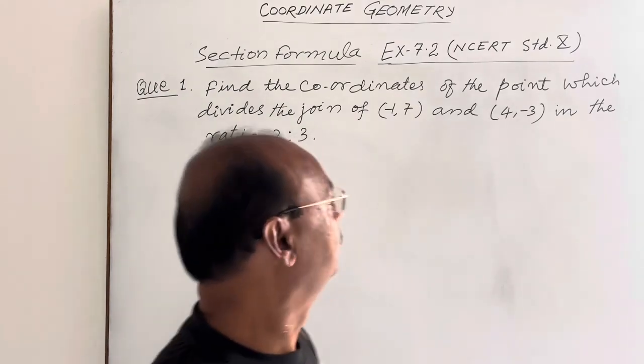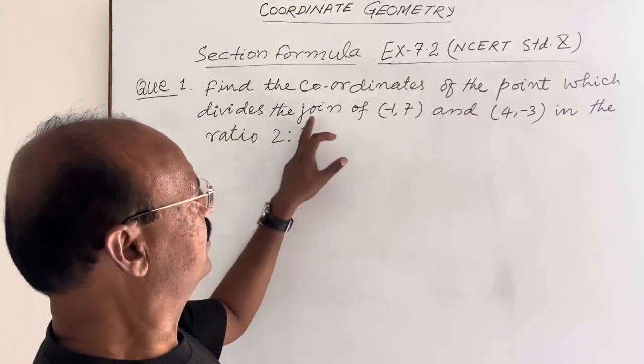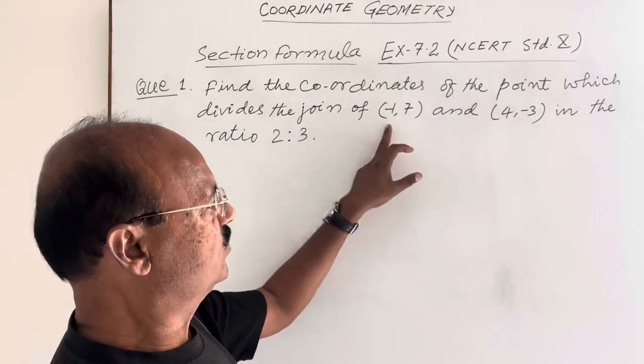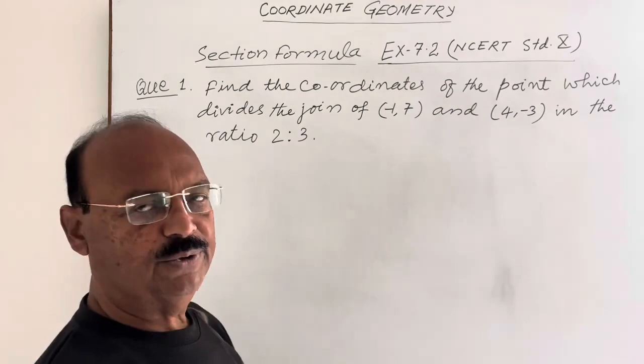Here the question is: find the coordinates of the point which divides the join of (-1,7) and (4,-3) in the ratio 2:3.